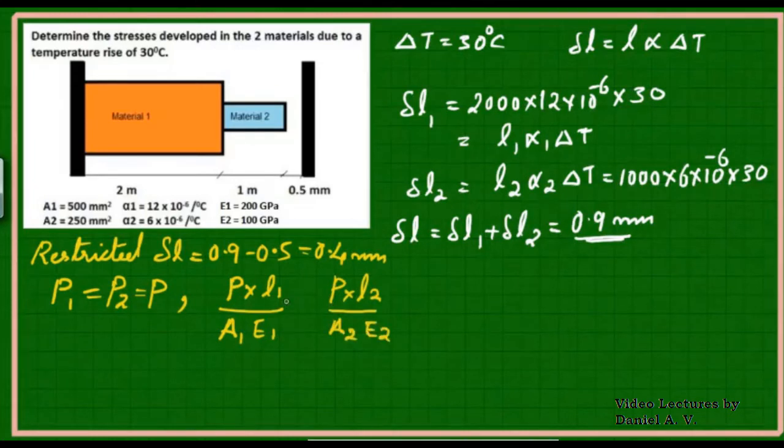The force is going to create a change in length. If we observe closely, when I add these two changes in length, this change in length is due to the push because it is not allowed to elongate beyond 0.5 mm. So we can write that the restricted elongation is the sum of these two, which is 0.4 mm.